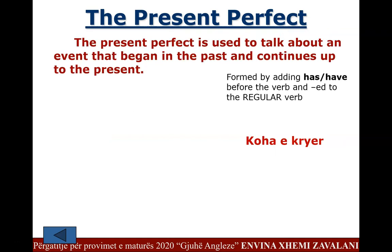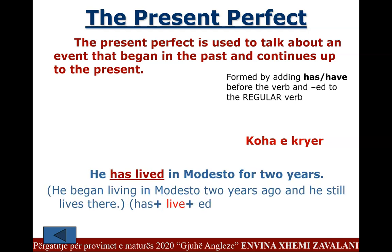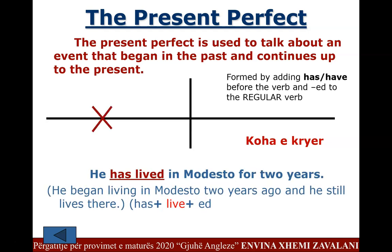So, let's focus on the present perfect tense — 'koha e kryer' in Albanian. The present perfect tense is used to talk about an event that began in the past and continues up to the present. It is formed by adding has or have before the verb and -ed to the regular verb.